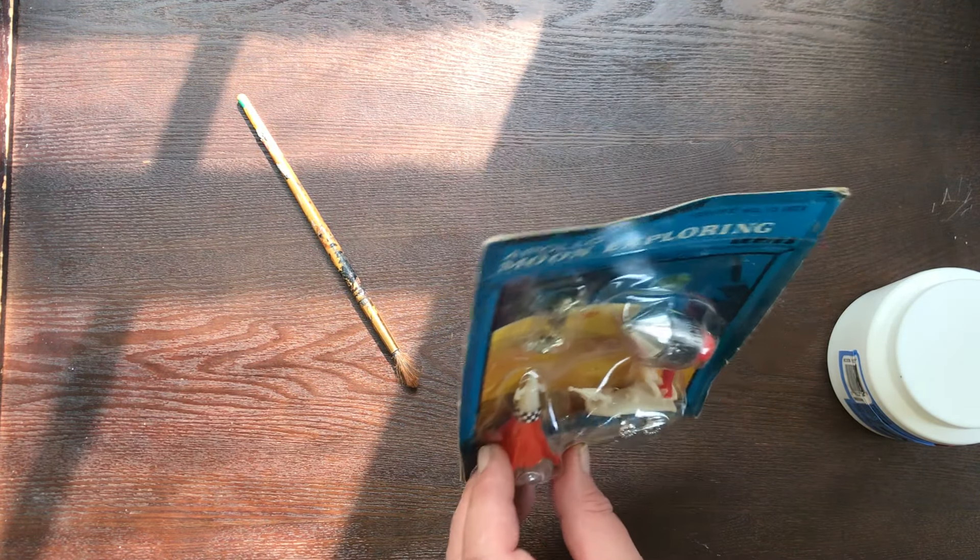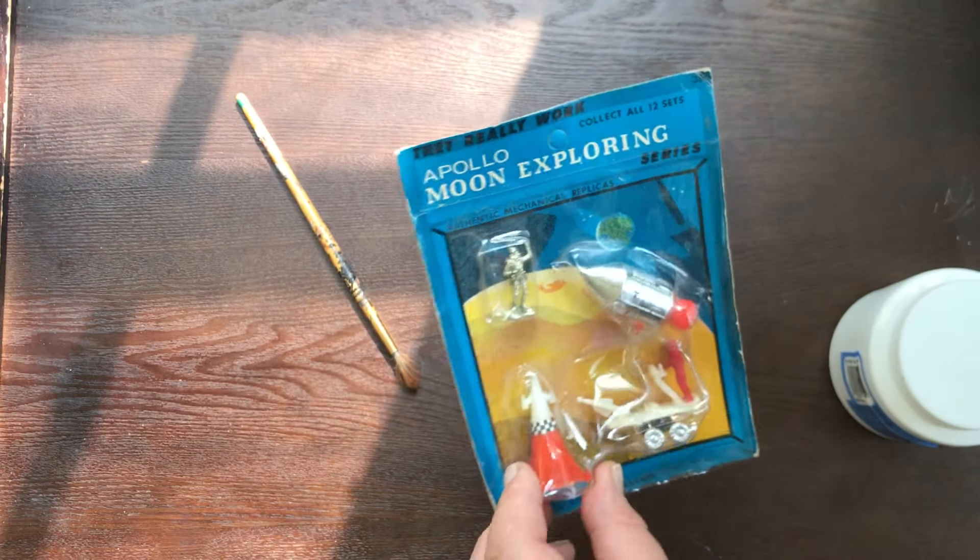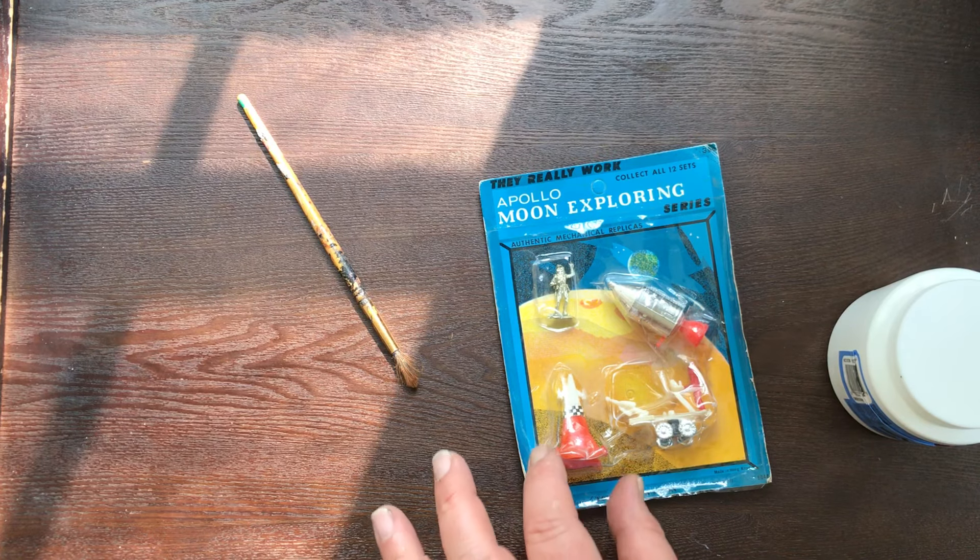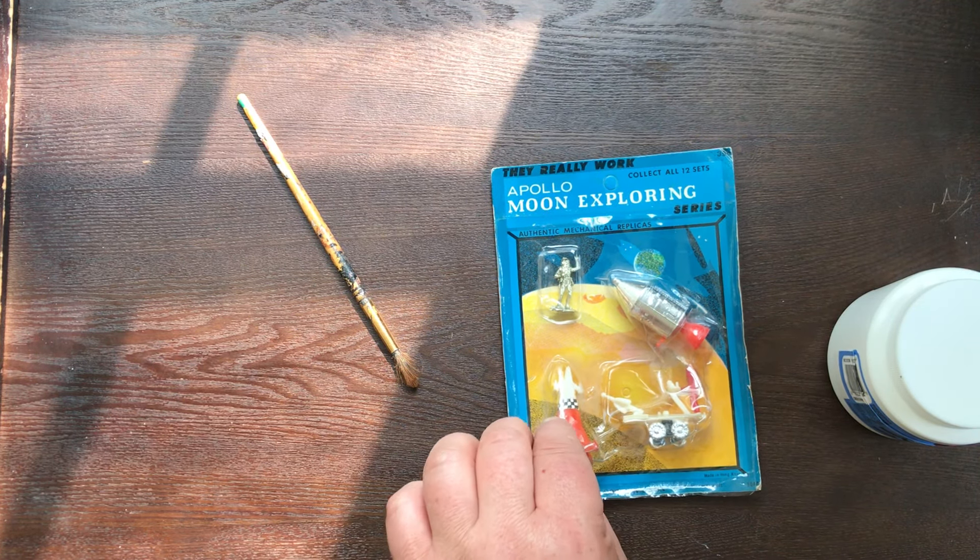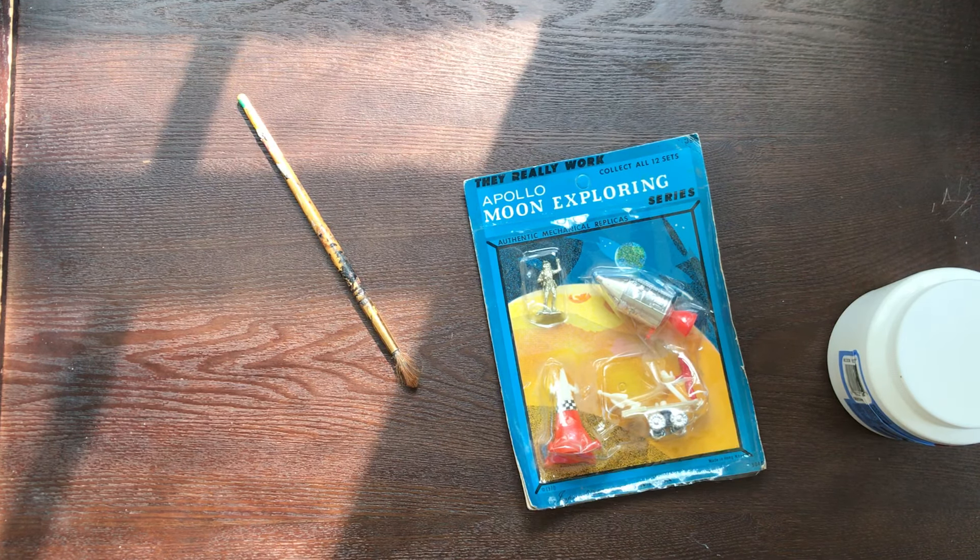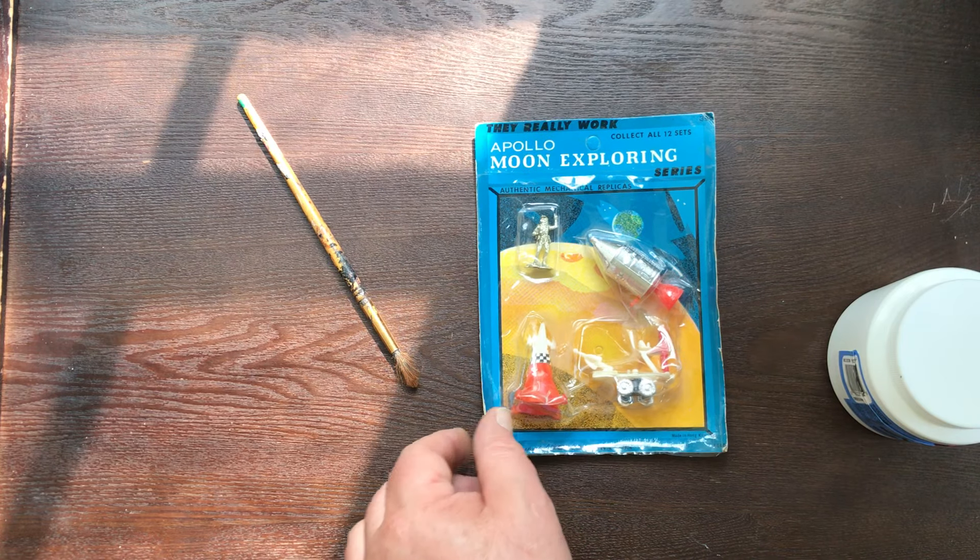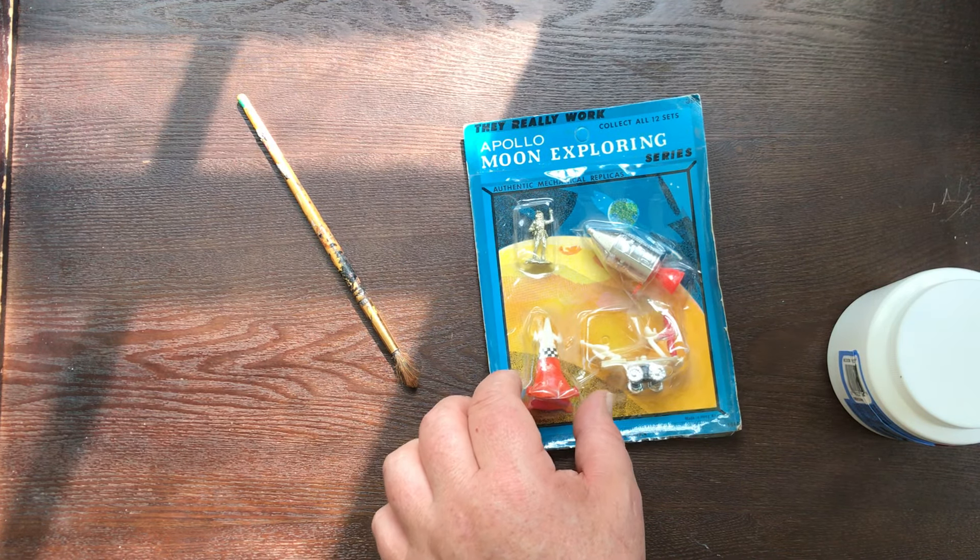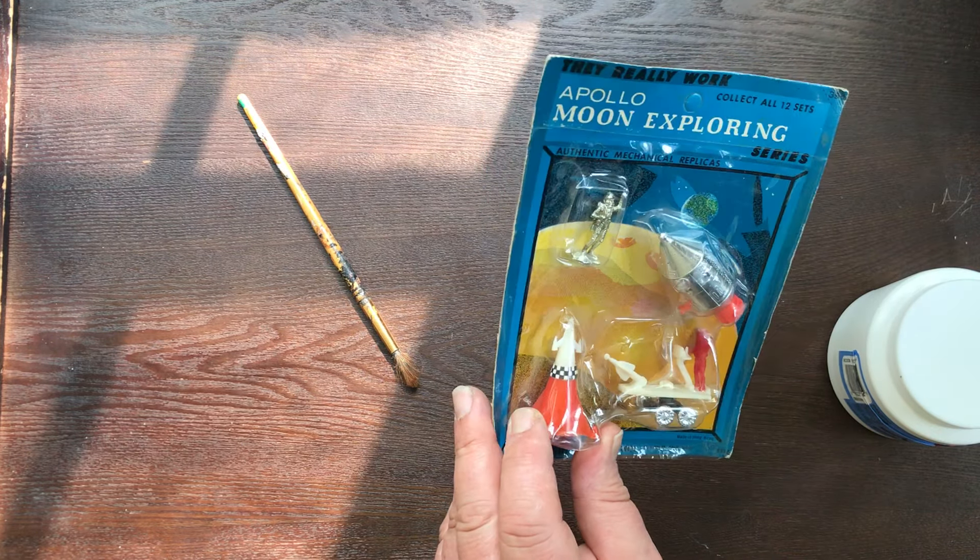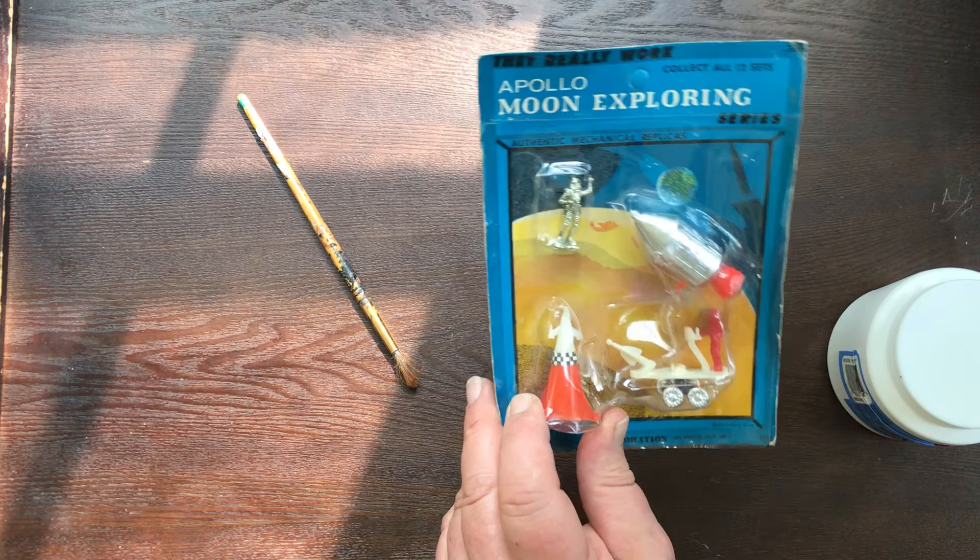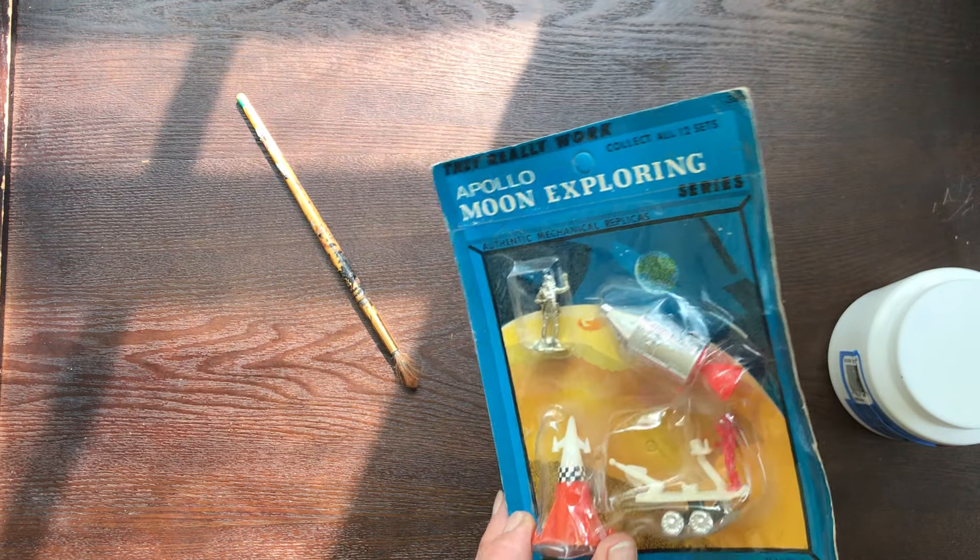And I've chosen this of two identical sets that I got to open. But I want to remove it in a way that preserves the packaging, so that after I'm done, or between uses of utilizing the pieces in diorama works, it can go back into the package and go back up on the wall.